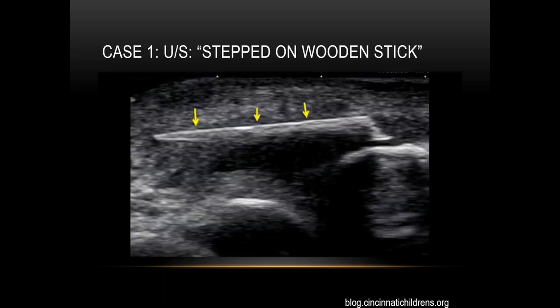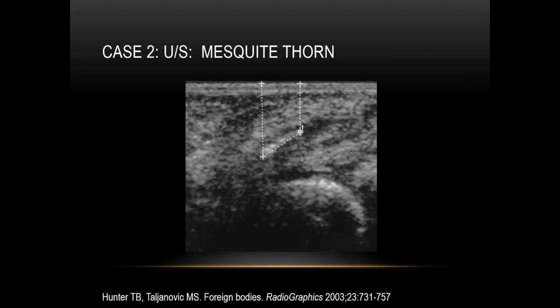Here is an example: a patient stepped on a wooden stick. You can see the hyperechoic linear foreign body with relatively clean posterior acoustic shadowing. In another case, a patient had a mesquite thorn in the subcutaneous tissues. You can see the hyperechoic thorn and some dirty posterior acoustic shadowing.